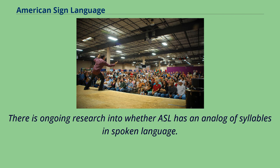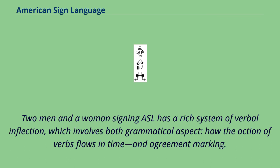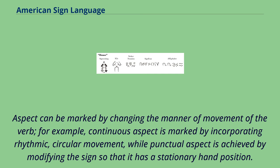ASL has a rich system of verbal inflection, which involves both grammatical aspect — how the action of verbs flows in time — and agreement marking. Aspect can be marked by changing the manner of movement of the verb. For example, continuous aspect is marked by incorporating rhythmic, circular movement, while punctual aspect is achieved by modifying the sign so that it has a stationary hand position.